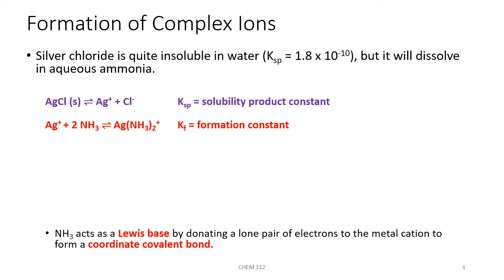The formation of complex ions is something that affects the solubility of slightly soluble solids. Silver chloride is insoluble in water — it has a Ksp of 1.8 times 10 to the negative 10th — but it dissolves in aqueous ammonia much better.